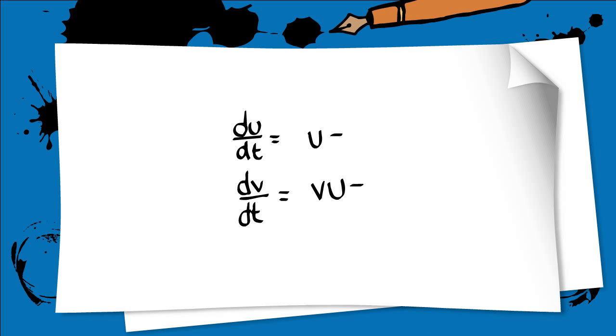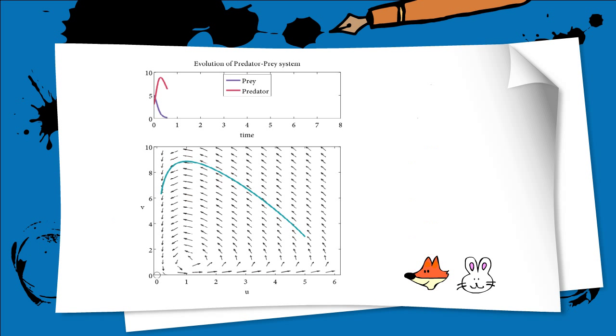Shown here is a qualitative picture of the dynamics that arise with this particular system. We obtain a stable limit cycle where the populations of both species fluctuate, but are cyclic.